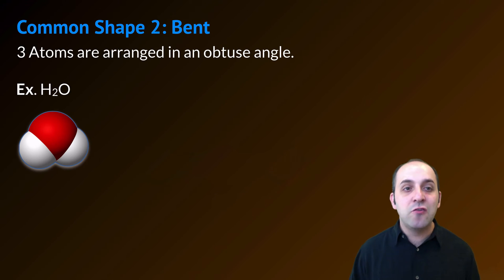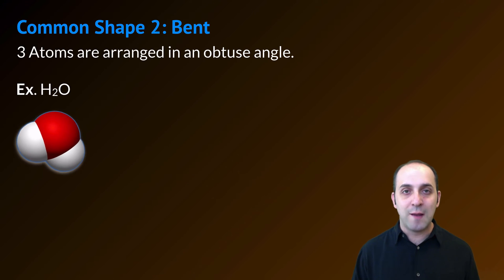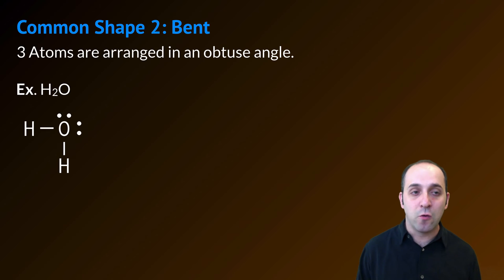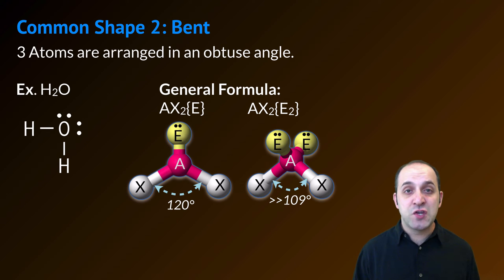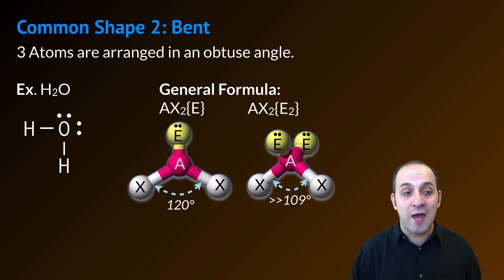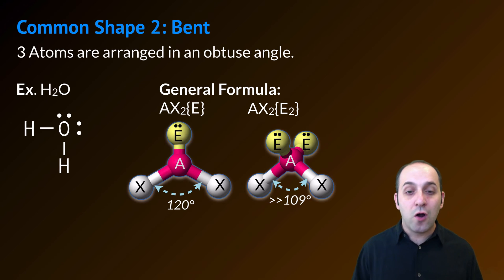Our next common shape is the bent shape — three atoms arranged in an obtuse angle. Water is a good example of this. Here's water's Lewis structure. I hope you can see why we represent water with the hydrogens on the left and at the bottom instead of on both sides — it's really to evoke the notion that water is a bent molecule. Bent molecules are going to have the general formula AX2 with one lone pair on the central atom, or AX2 with two lone pairs on the central atom. When there's only one lone pair, the bond angle between the two X atoms is going to be 120 degrees. When there are two lone pairs, like water, the bond angle is actually going to be much less than 109 degrees. So even though the bond angles are different, both molecules are generally referred to as a bent structure.